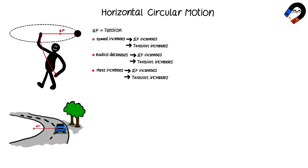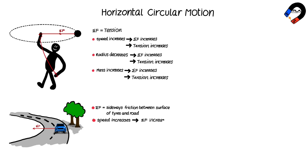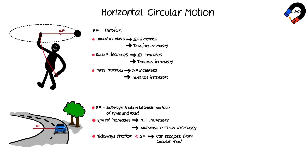For a car moving on a circular road, the resultant force, or centripetal force, is provided by the sideways friction between the surface of the car's tires and the road. If the speed of the car increases, the resultant force increases, which causes the sideways friction to increase. If the sideways friction is not enough to support the resultant force, the car escapes from the circular road.